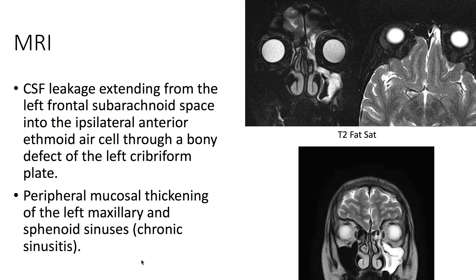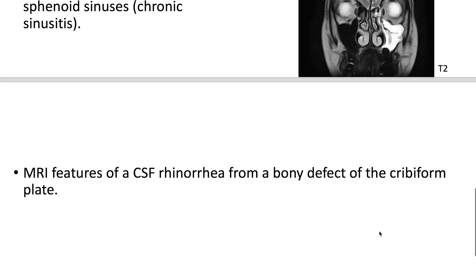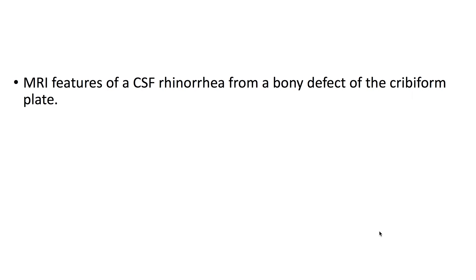On MRI, we see CSF leakage extending from the left frontal subarachnoid space into the ipsilateral ethmoid sinus and then into the maxillary sinus. This occurs through a small bony defect in the left cribriform plate. The MRI features of CSF rhinorrhea from a bony defect of the cribriform plate are demonstrated in this particular case.